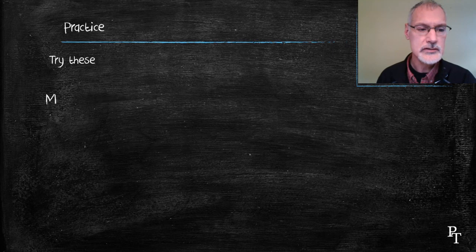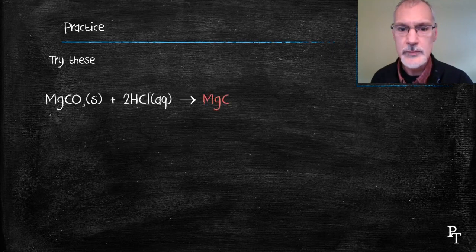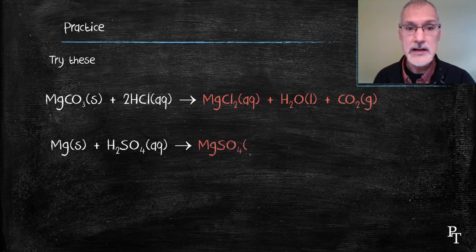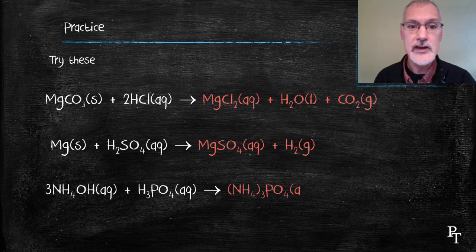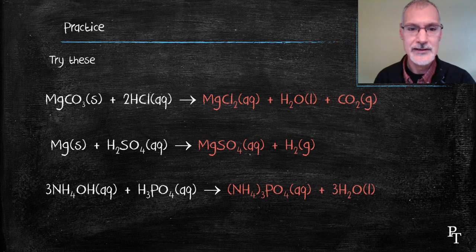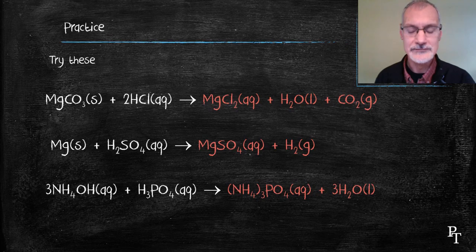So, the first reaction, a carbonate with an acid should make carbon dioxide and water. The second reaction, an acid and a metal should produce hydrogen and a salt. And the final reaction is a neutralization reaction with the tri-protic phosphoric acid. Congratulations if you got these. We'll see you guys. Thank you.